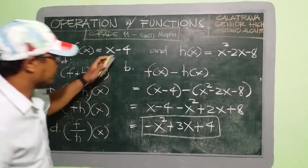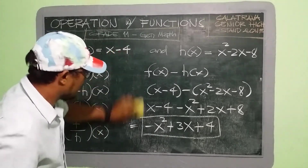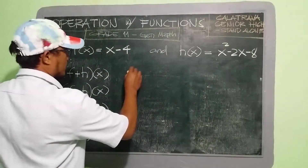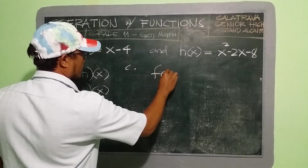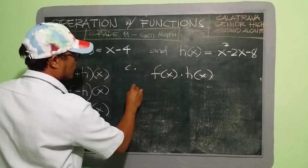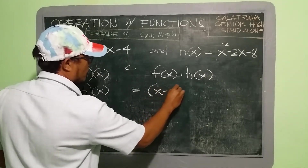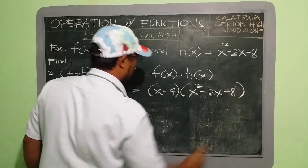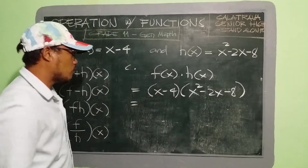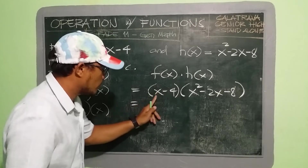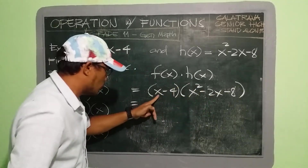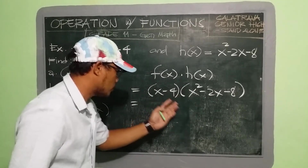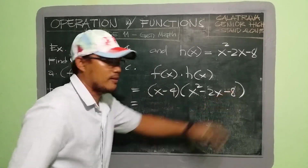Next, letter C — the product. We have f(x) times h(x). Copy: (x − 4) multiplied by (x² − 2x − 8). Apply the distributive property of multiplication: x is multiplied to x², x to −2x, and x to −8; then −4 is multiplied to x², −4 to −2x, and −4 to −8.